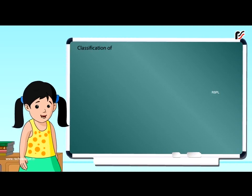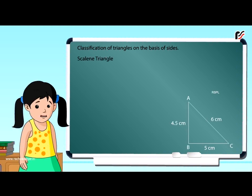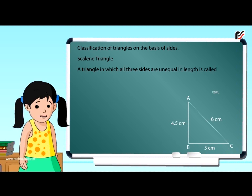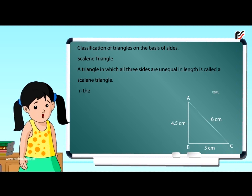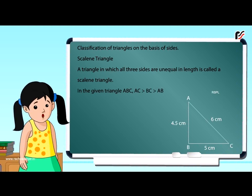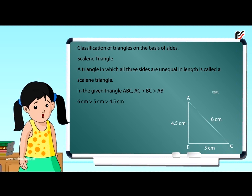Classification of triangles on the basis of sides. A triangle in which all three sides are unequal in length is called a scalene triangle. In the given triangle ABC, AC is greater than BC, which is greater than AB: 6 cm is greater than 5 cm, which is greater than 4.5 cm.